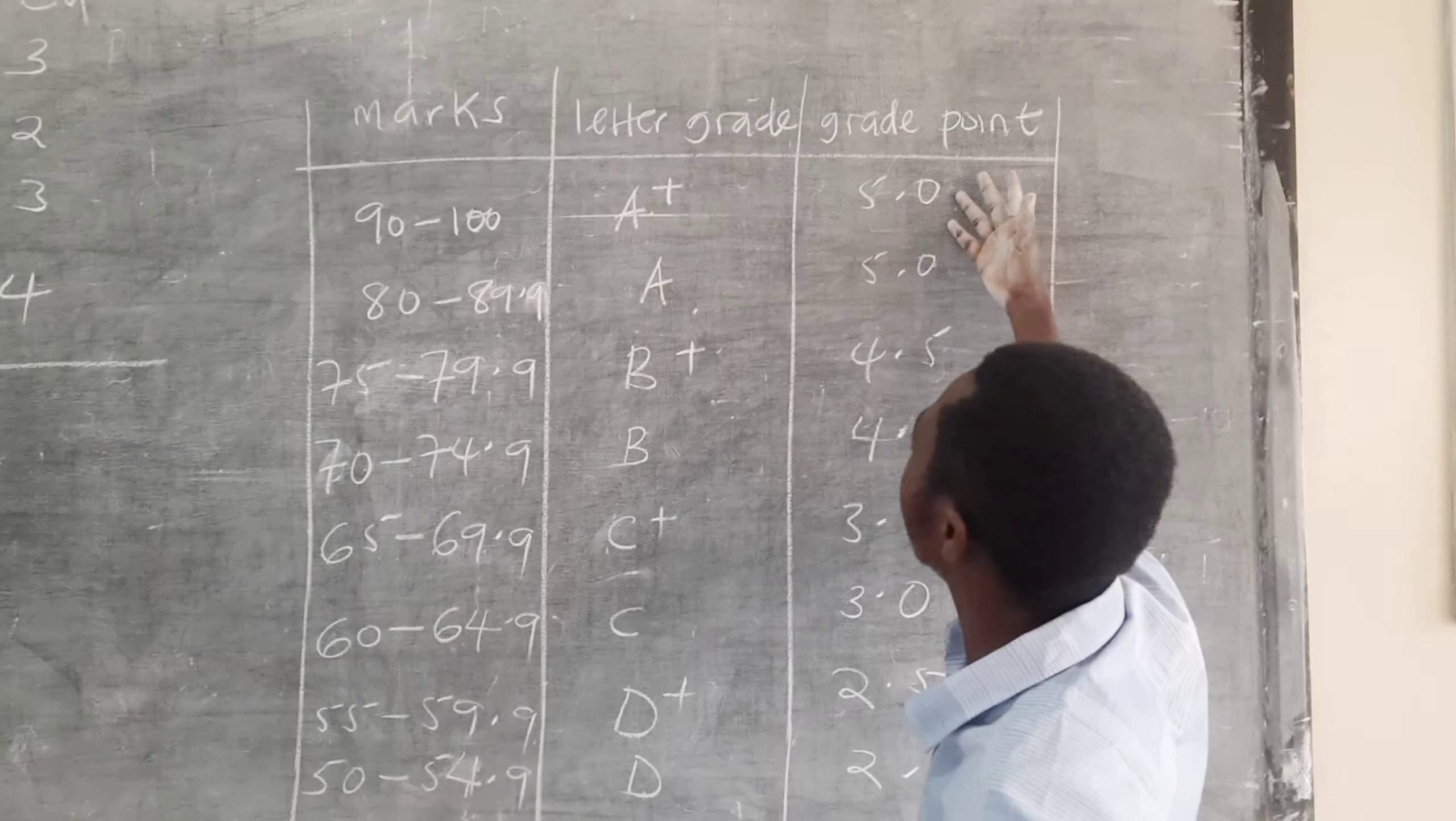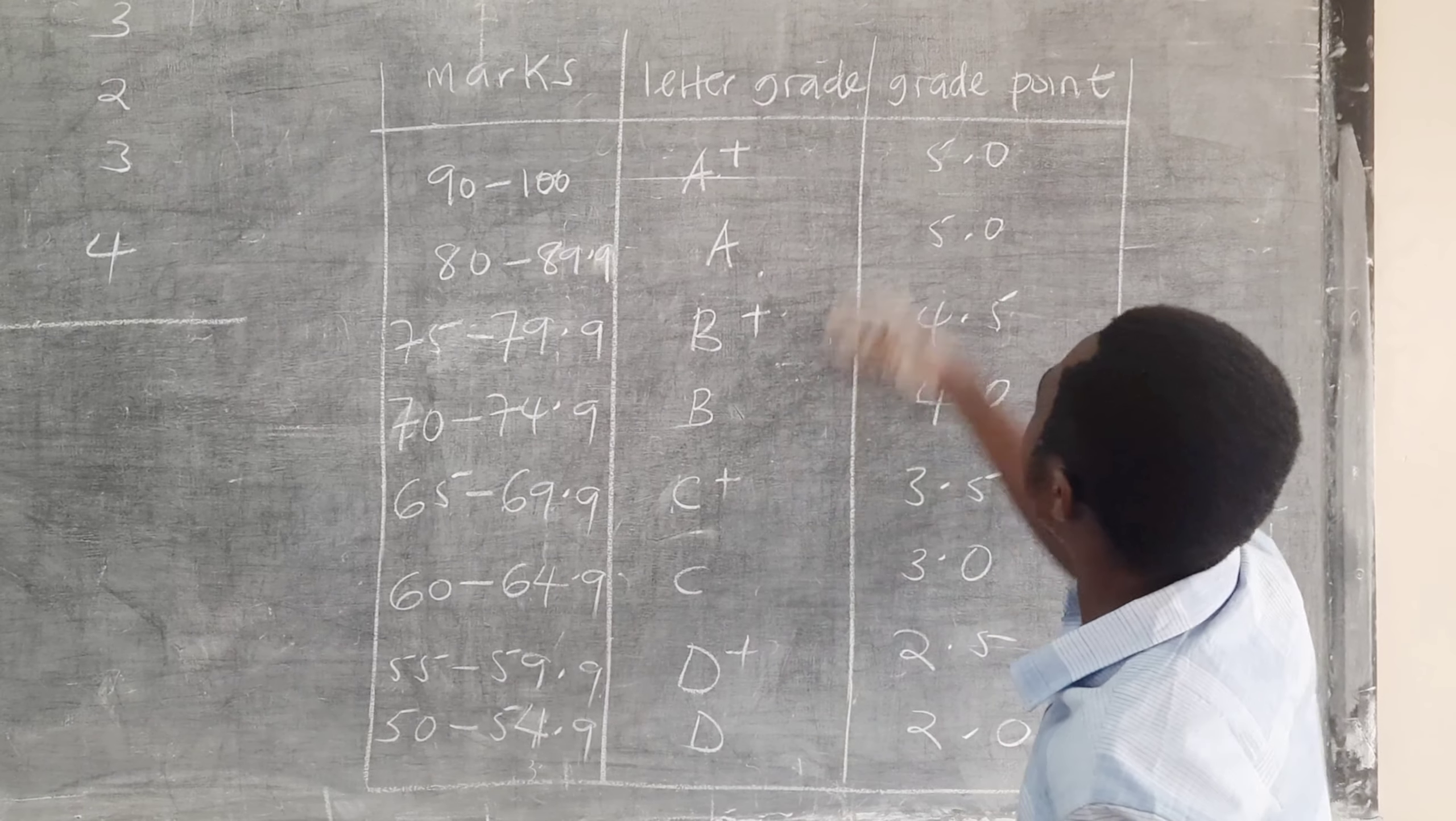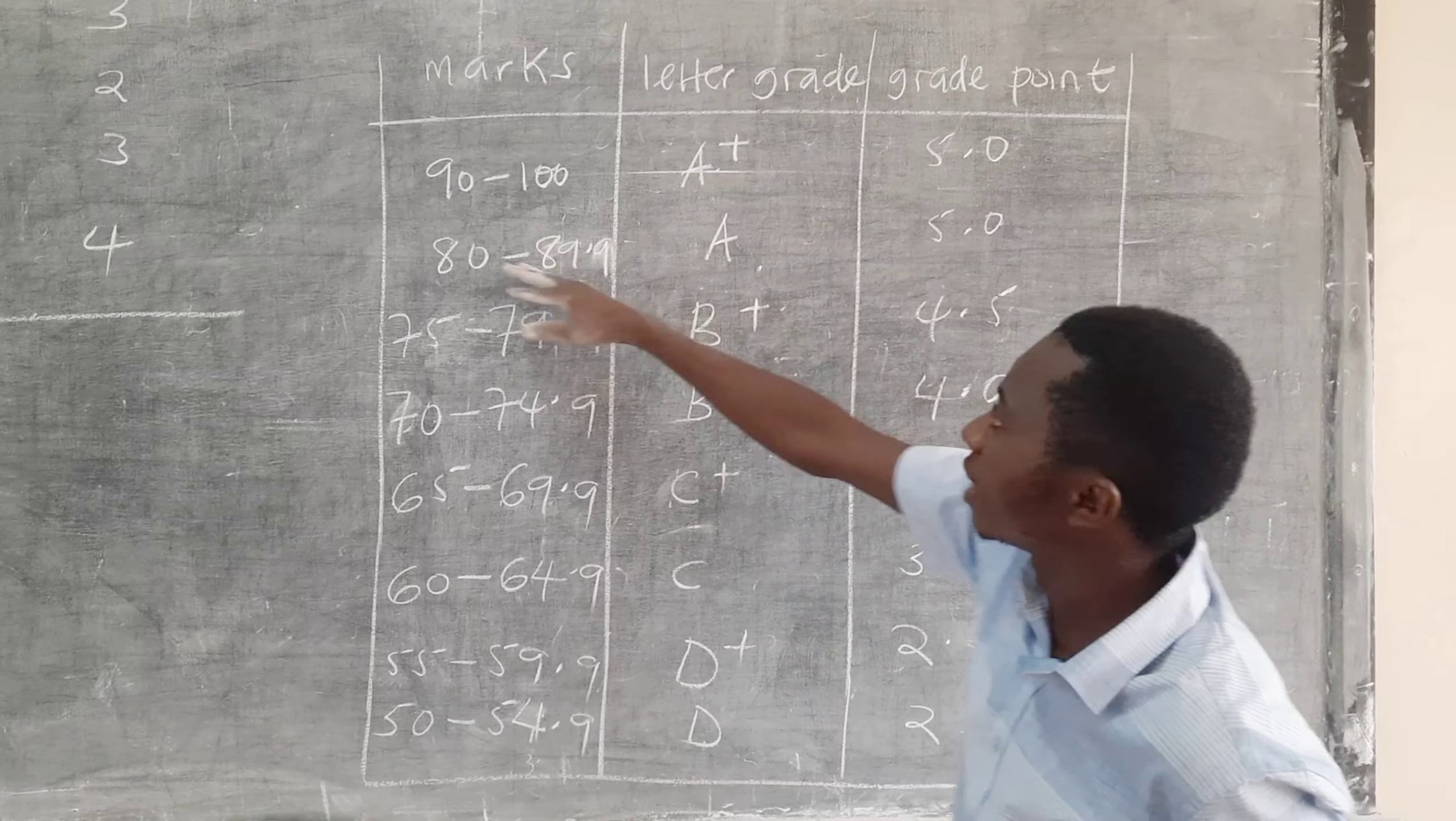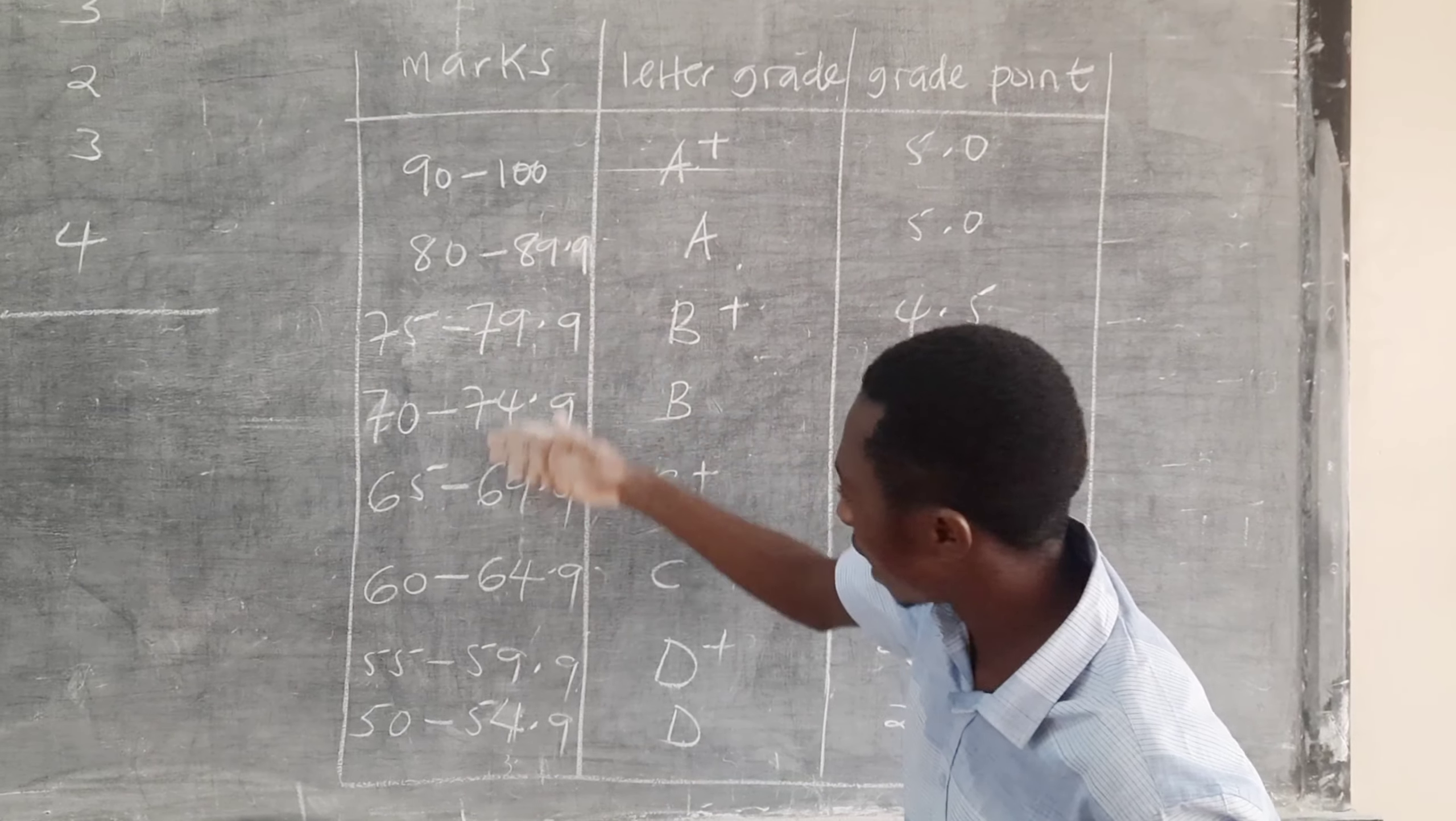This is our grading scale. We have the marks, we have the letter grades and the grade points. And you realize that if you score 90 to 100, it's an A plus and it's matching at 5.